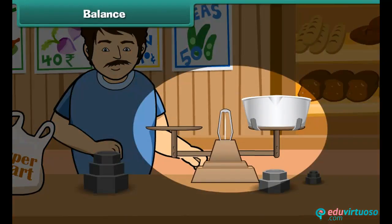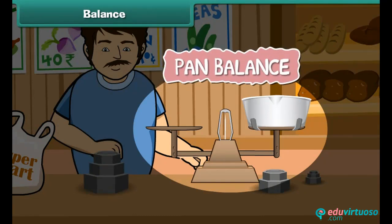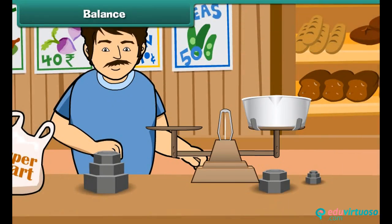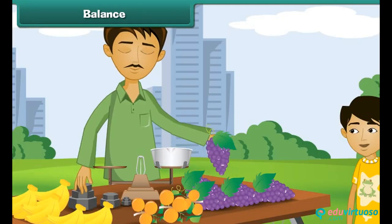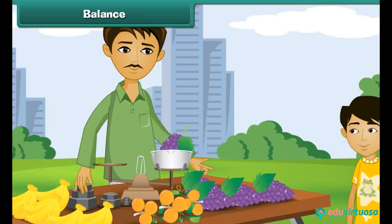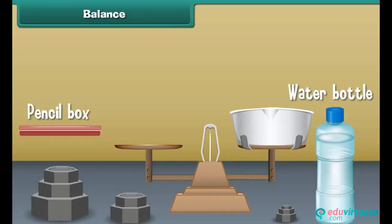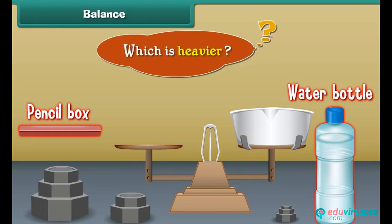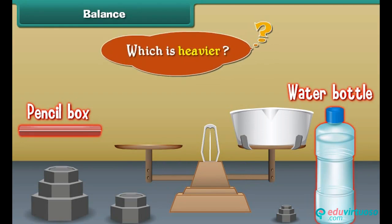Have you seen this instrument? Yes, it is a pan balance. You may have seen it at a grocery store with vegetable sellers and fruit sellers. Now let us measure the weight of the pencil box and water bottle. Can you tell which is heavier — a pencil box or a water bottle?